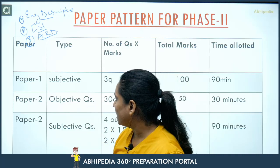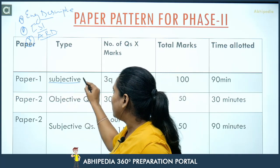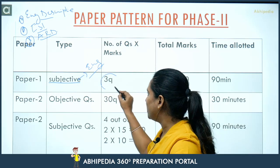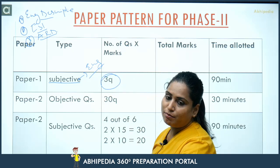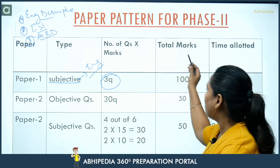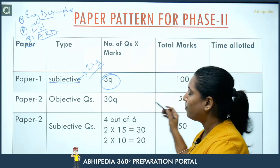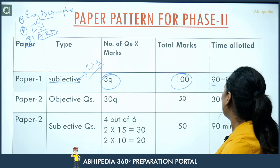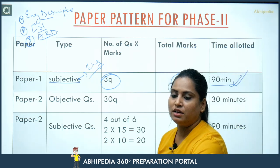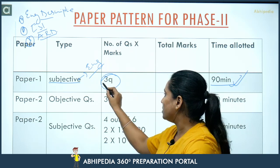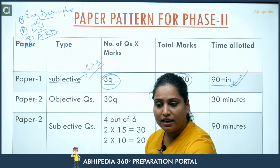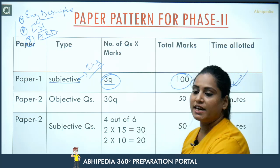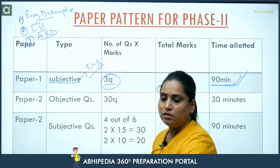Agar hum Paper 1 ki baat karein — toh subjective hoga, that is English Descriptive, jis mein aapko teen questions diye jayenge. In mein kitne marks allot kiye gaye hain — 100 marks — and kitna time allot kiya gaya hai, that is 90 minutes, aapko diye jayenge to complete your paper.